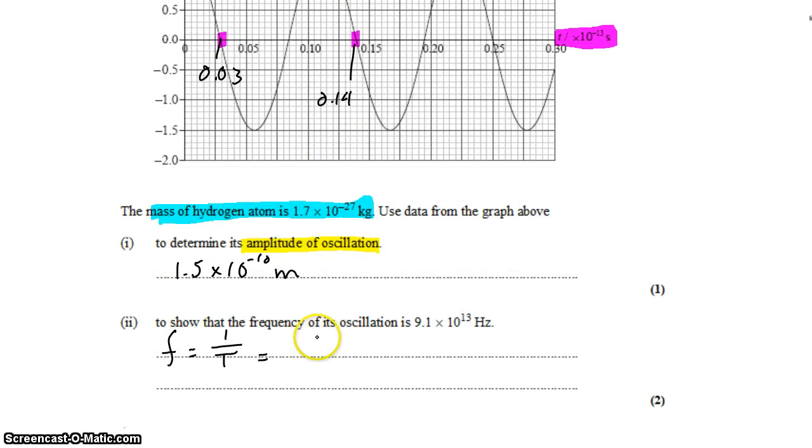And that allows us to say that the frequency is 1 divided by that separation, 0.14 take 0.03. And again we check our units. All of that is times 10 to the negative 13. You punch that into the calculator and you do get 9.1 times 10 to the positive 13 hertz.